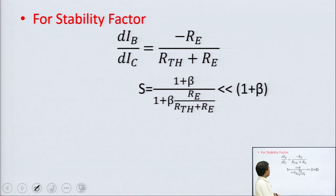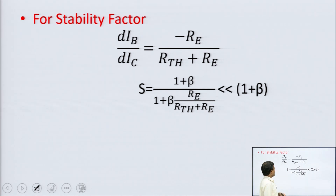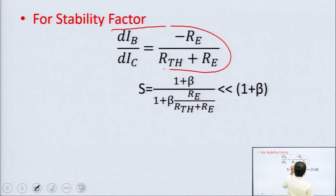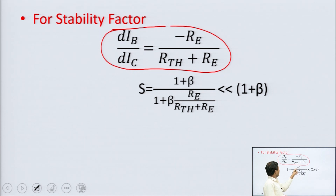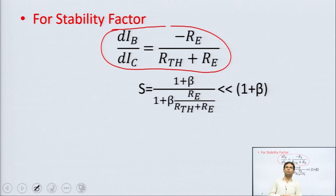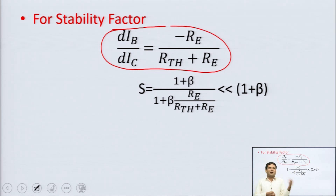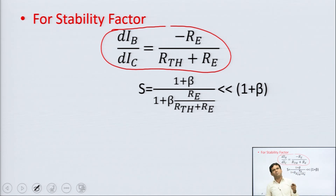For the stability factor, differentiate equation 1 with respect to IC. This gives DIB/DIC equals minus RE upon RTH plus RE. Substituting into the stability factor formula: S equals 1 plus β upon 1 plus β·RE upon (RTH plus RE). This is clearly less than 1 plus β because the denominator is greater than 1, so S is much less than 1 plus β — meaning the stability of this circuit is very, very good.